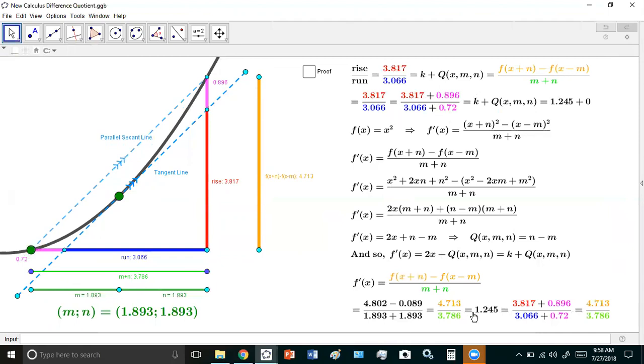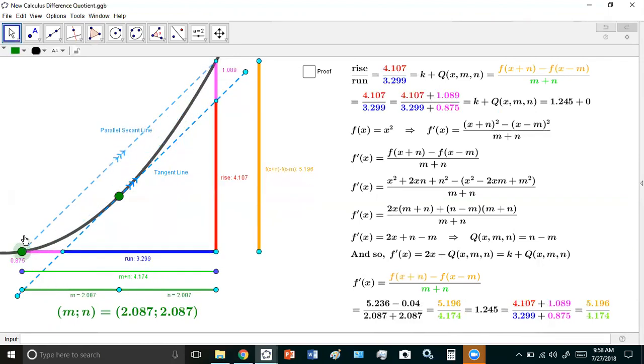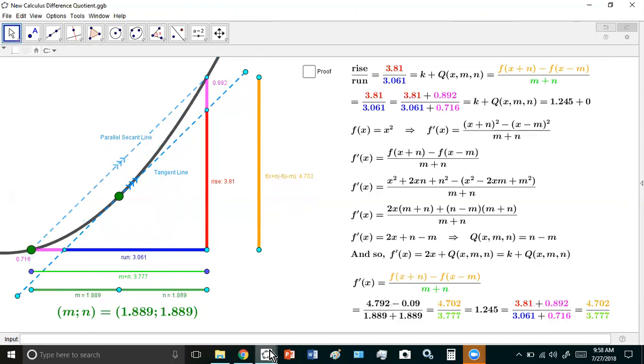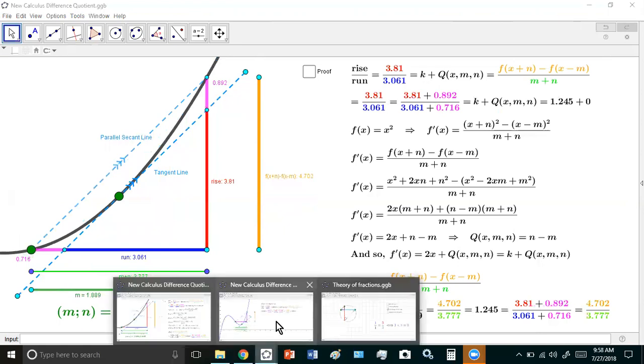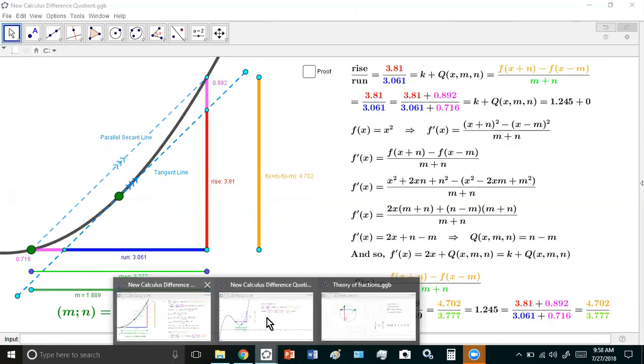And we can see that using the new calculus definition the derivative is always the same. The derivative is k and you'll notice this value here 1.245, it's the derivative, it's the slope of the tangent line. And just to make it a little more clear for you I've chosen another curve because in this particular applet here I used a quadratic curve.